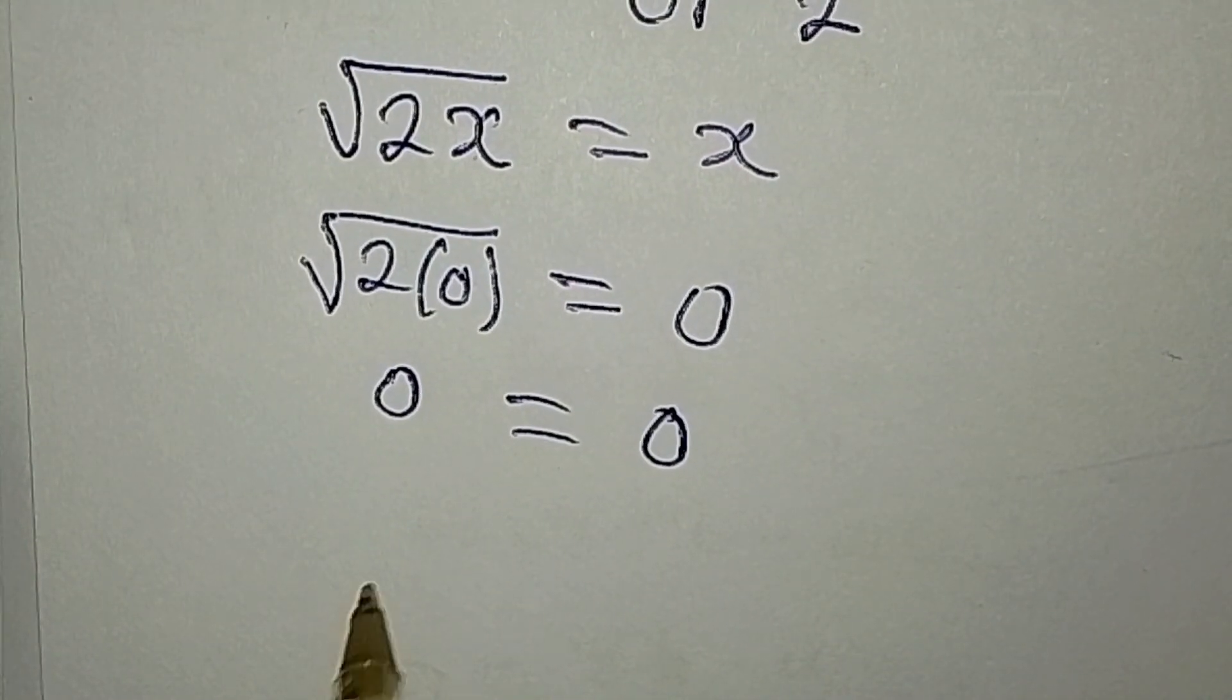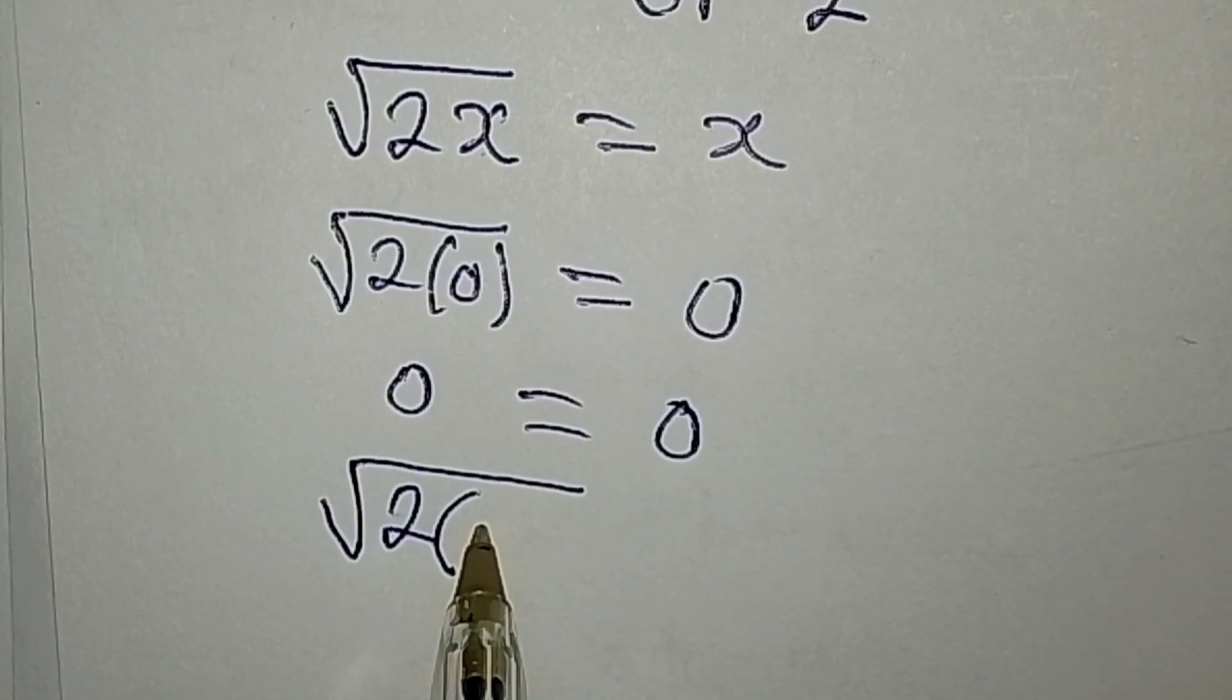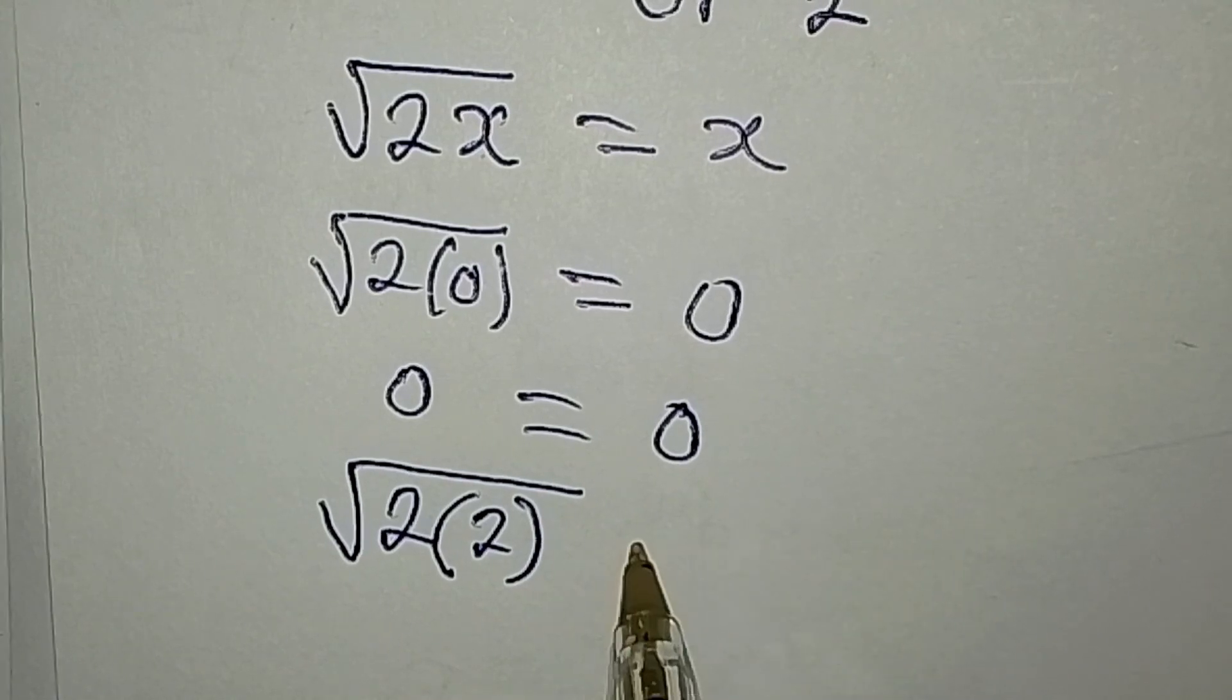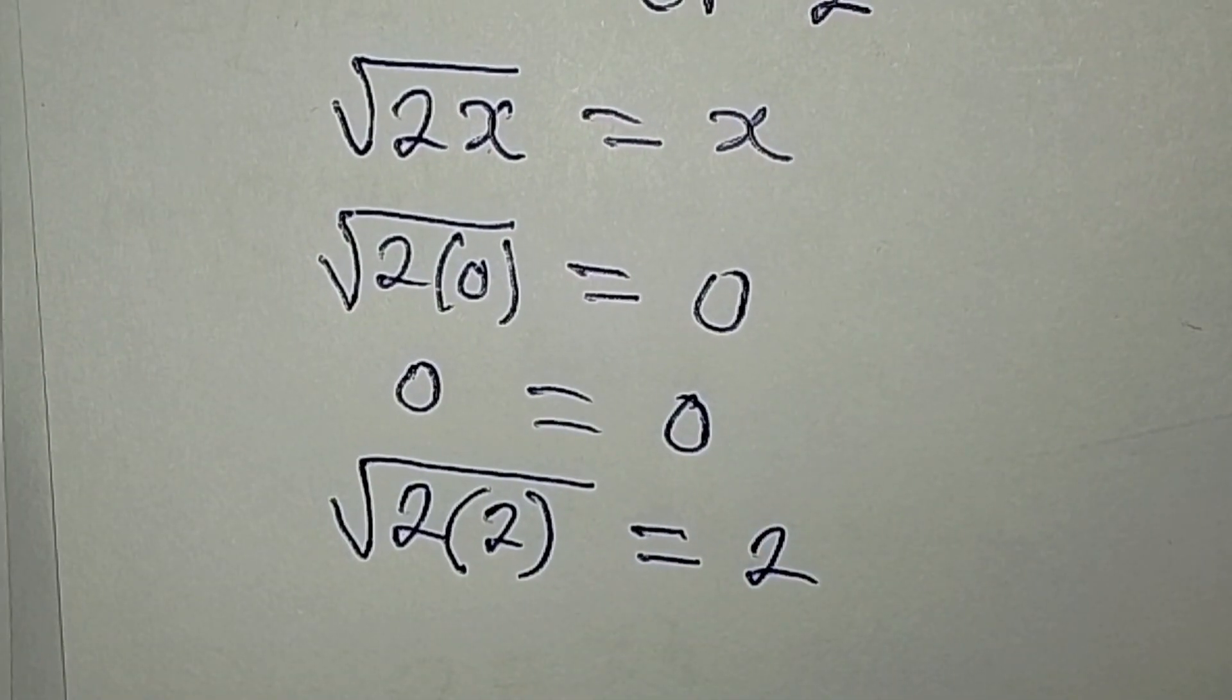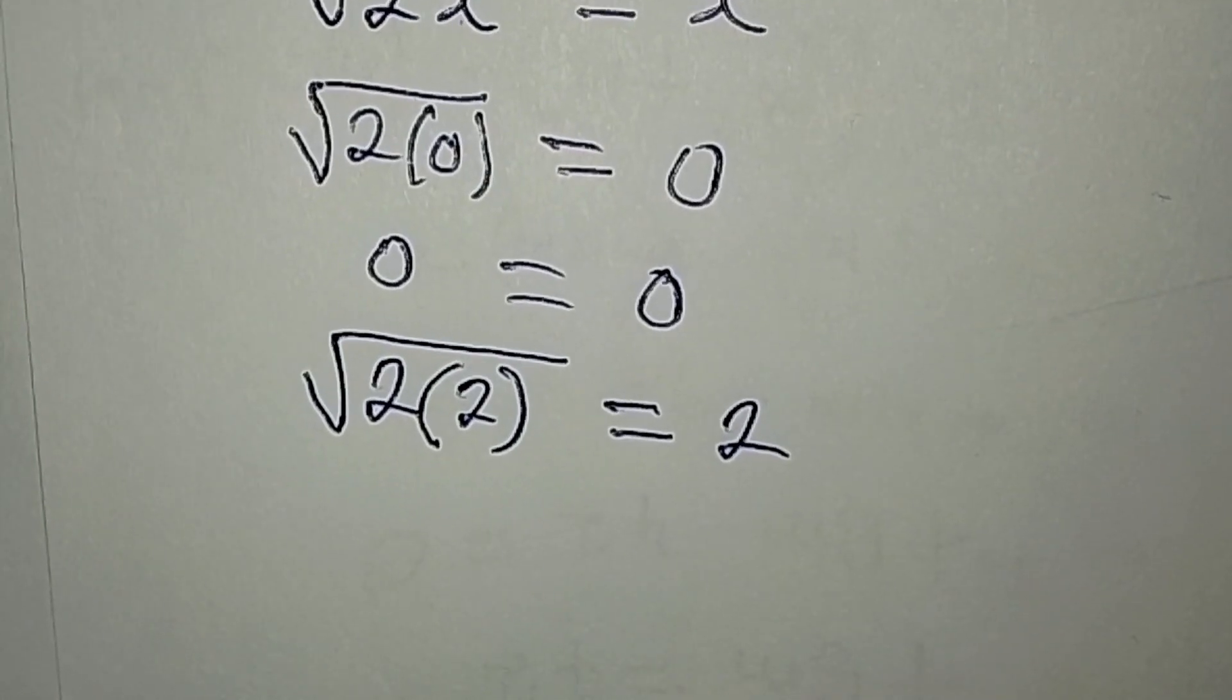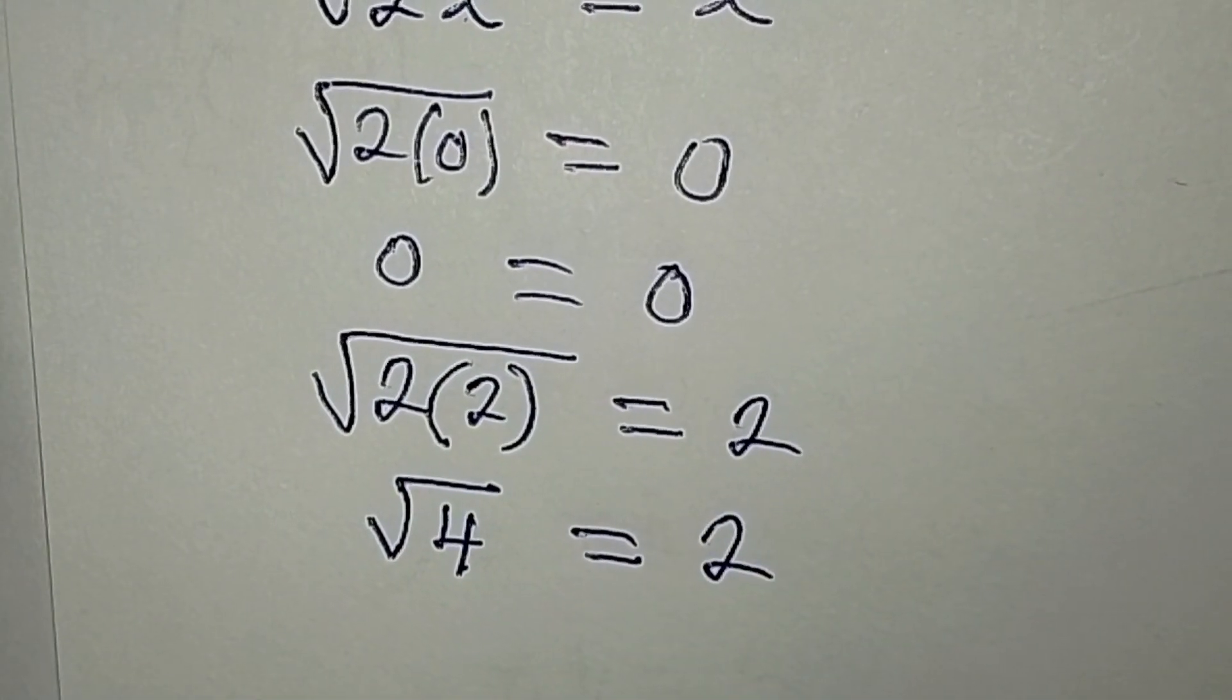Now let's work with the second value of x, which is 2. We have square root of 2 multiplied by 2 equals x, but x is now 2. This means we are looking for the square root of 4, and square root of 4 is 2.